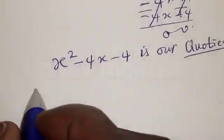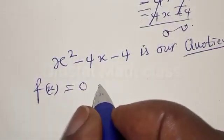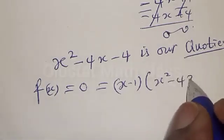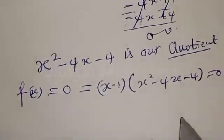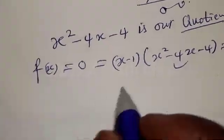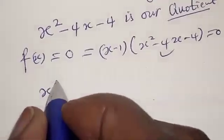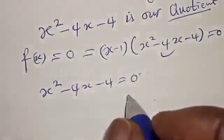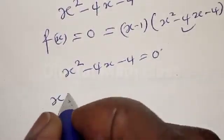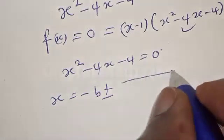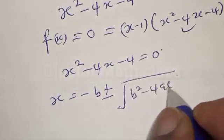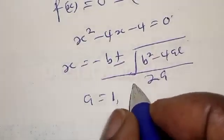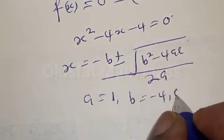Therefore with f of s equal to 0, we have s minus 1 times s squared minus 4s minus 4 equal to 0. This is a quadratic equation. We have s squared minus 4s minus 4 equal to 0. Let's use the quadratic general formula: s equals minus b plus or minus square root of b squared minus 4ac, over 2a. From here, a equals 1, b equals minus 4, and c equals minus 4.